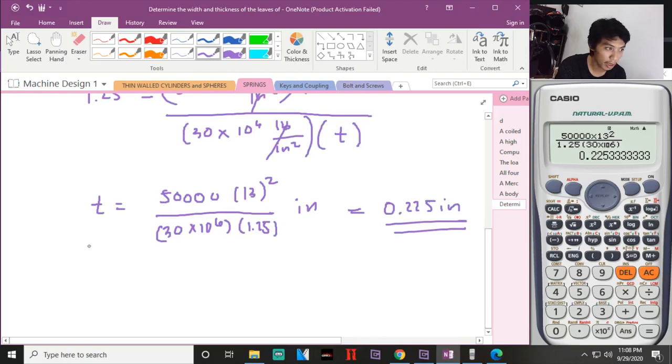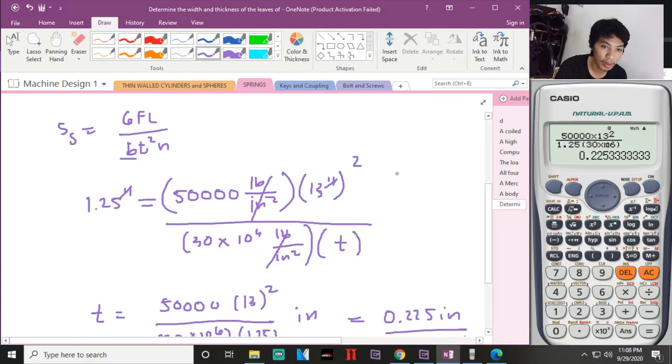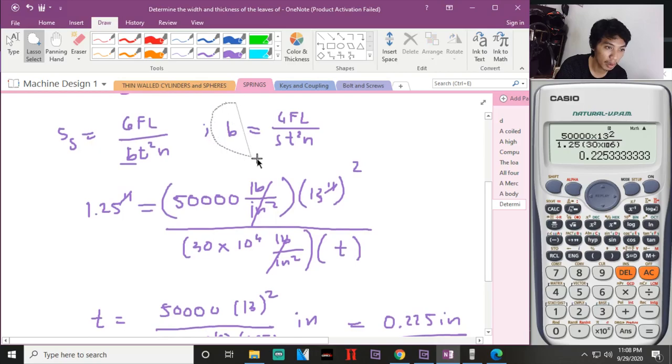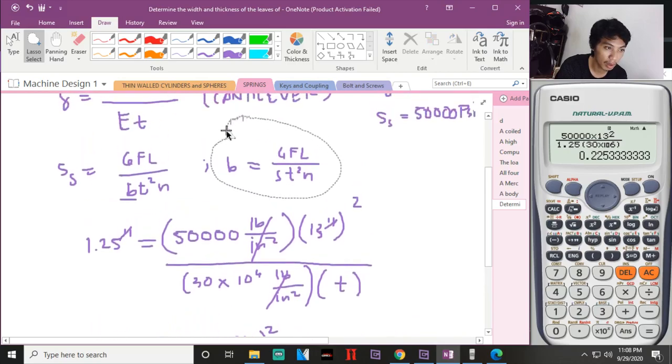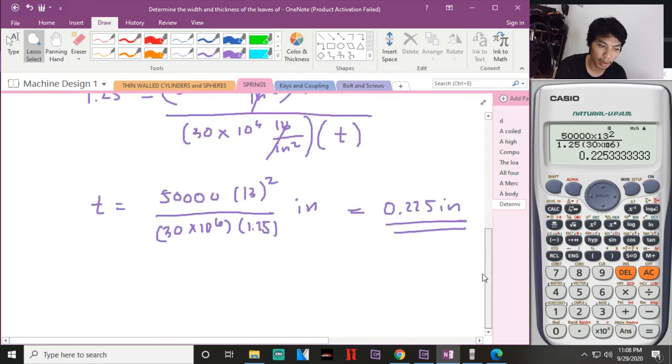Now for the width, here we'll get b. I'll reform this already. So b equal to 6 times F times L, divided by s times t squared times n.